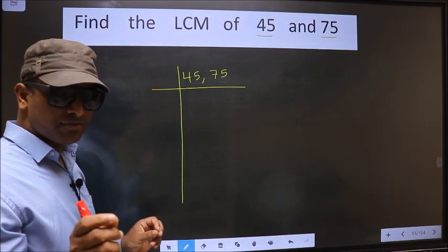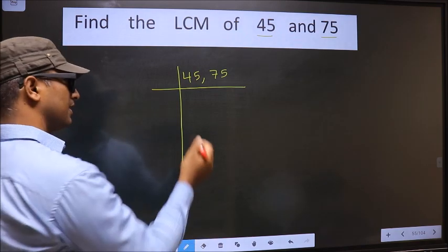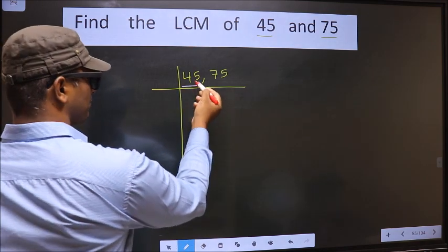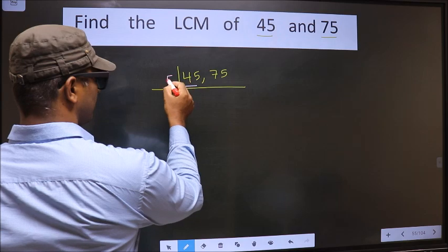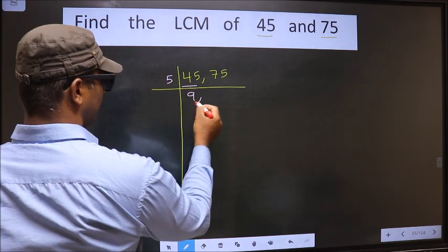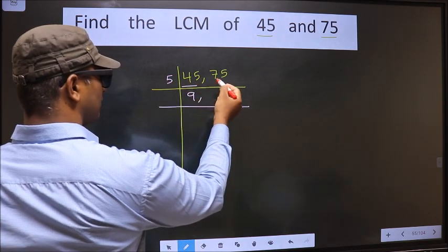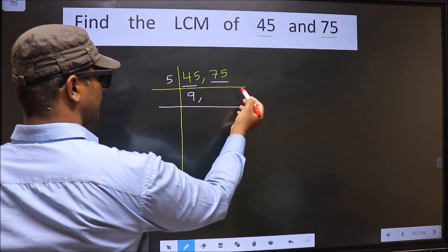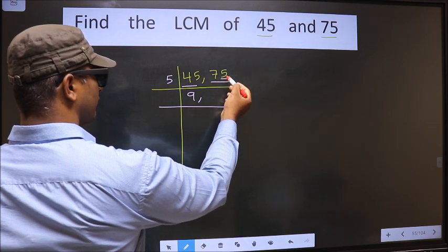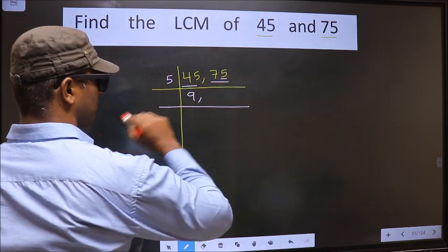Now we should focus on the first number, that is 45. 45 is 5 nines 45. Now the other number 75 — the last digit is 5, so this number is divisible by 5.